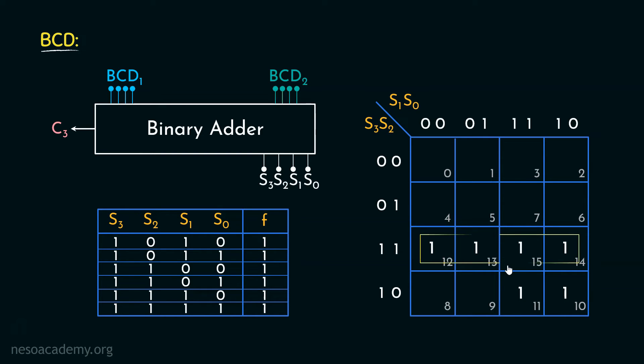Now observe, this is the first quad that we are getting. Now this particular quad will cancel out all the columns, so we will be left with this row value, which is S3 and S2 in uncomplicated form. So our function will have S3 and S2. Now proceeding forward, we can observe, this is the next quad that we are getting. Now for this particular quad, if you observe the rows, in these two rows, S2 is alternating the value. So that will cancel S2 out. And since S3 is same, so S3 will be retained. Now this particular quad also involves these two columns. Now if you observe, here S0 is alternating the value, so that will be cancelled out. Since S1 is retaining the same value, so in our function, we will have another min term, that is S3, S1.